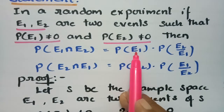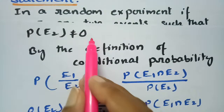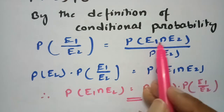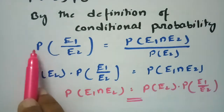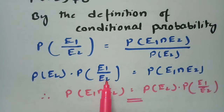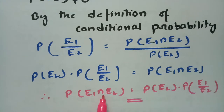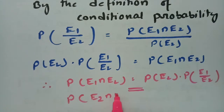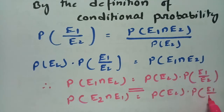Similarly, since P(E2) ≠ 0, by the definition of conditional probability, P(E1|E2) = P(E1 ∩ E2) / P(E2). Cross-multiplying: P(E2) · P(E1|E2) = P(E1 ∩ E2). Therefore P(E2 ∩ E1) = P(E2) · P(E1|E2). These are the two results of the multiplication theorem.